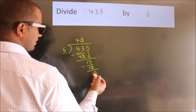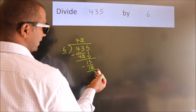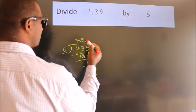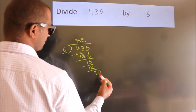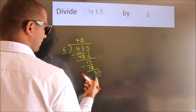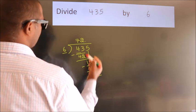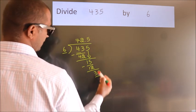After this, no more numbers to bring down. So what we do is put a dot and take 0. So 30. When do we get 30 in the 6 table? 6 times 5 equals 30.